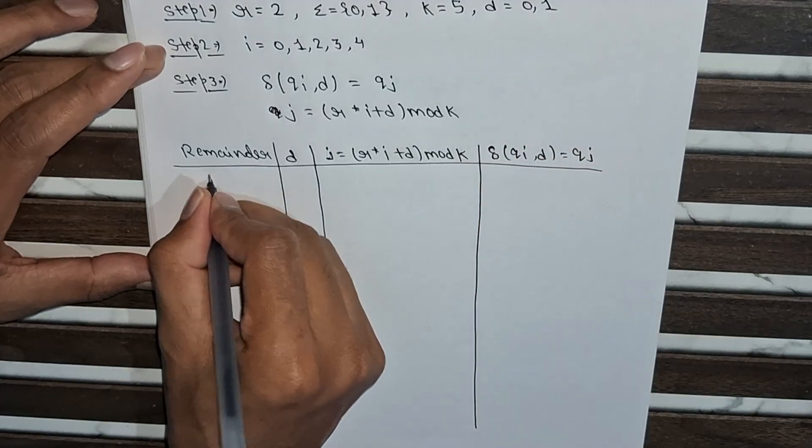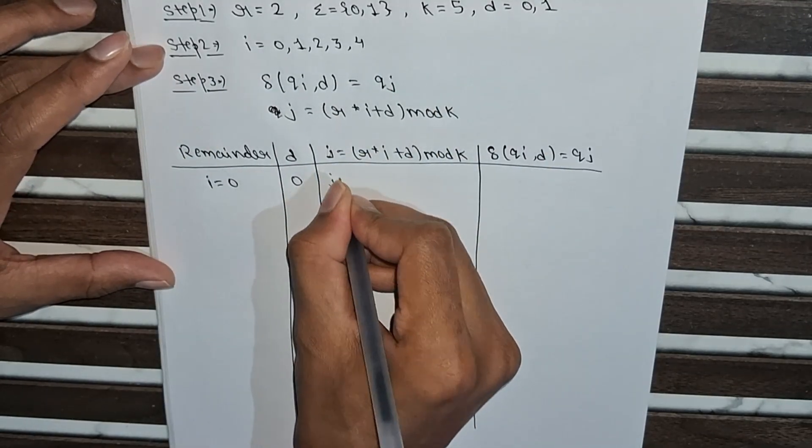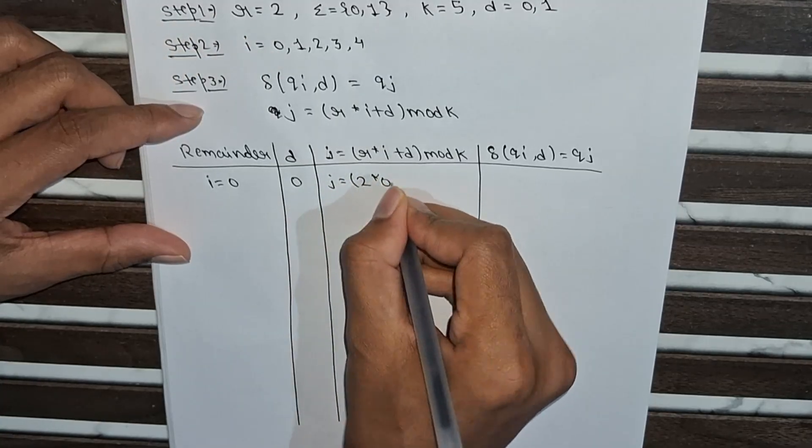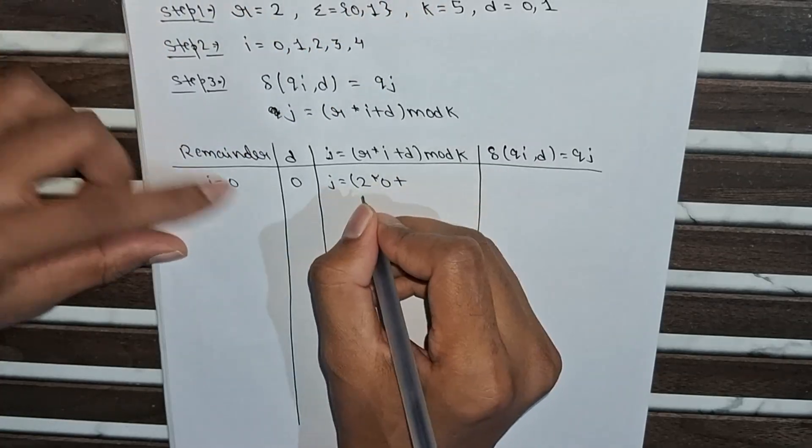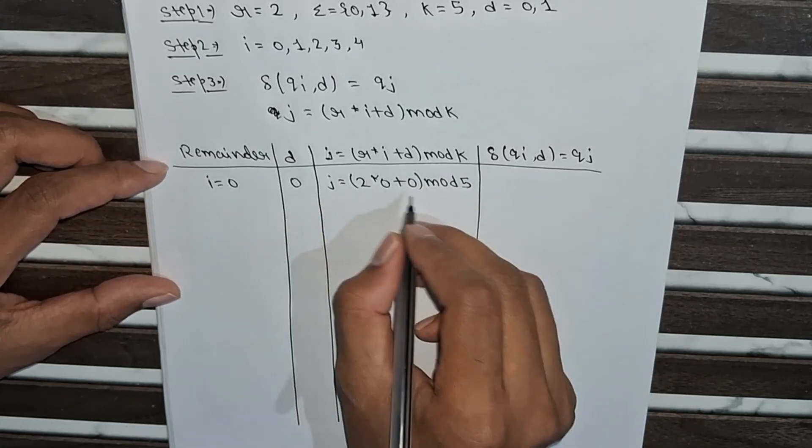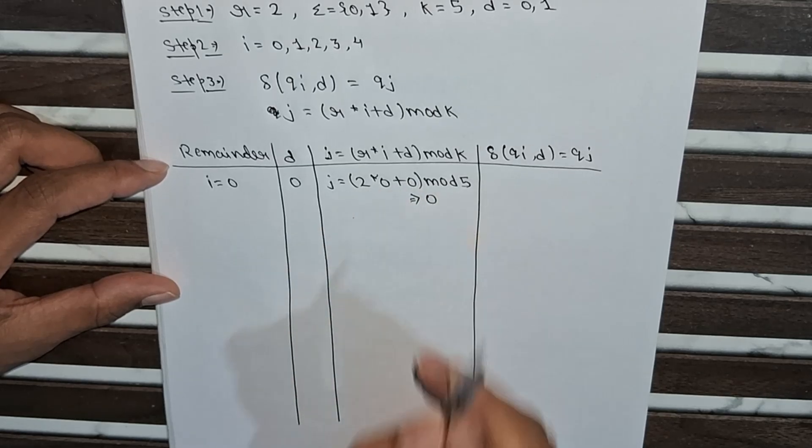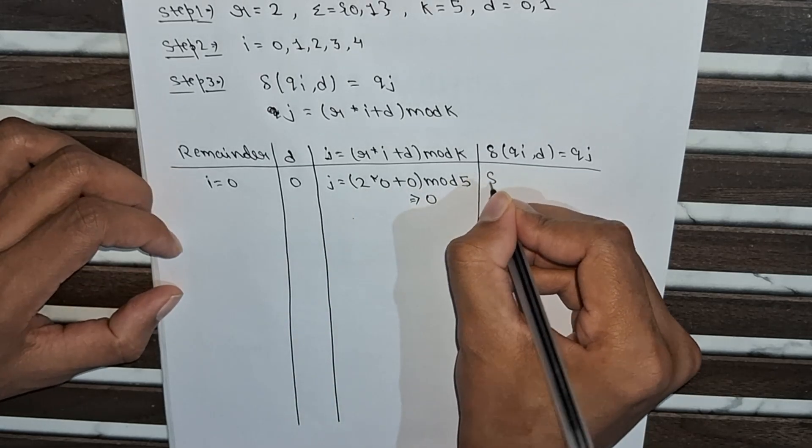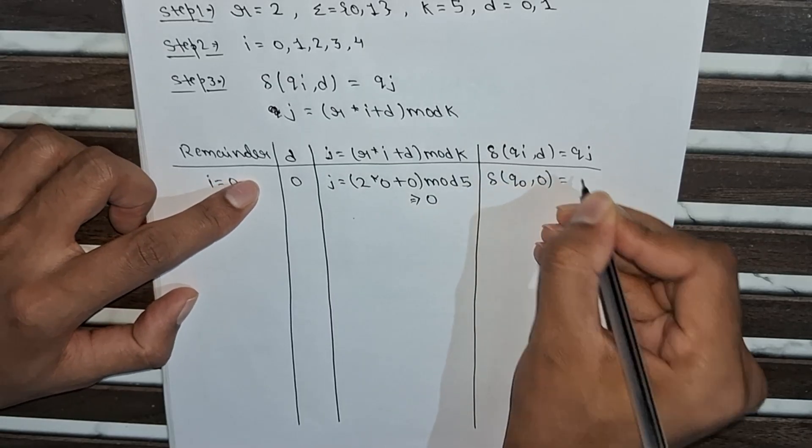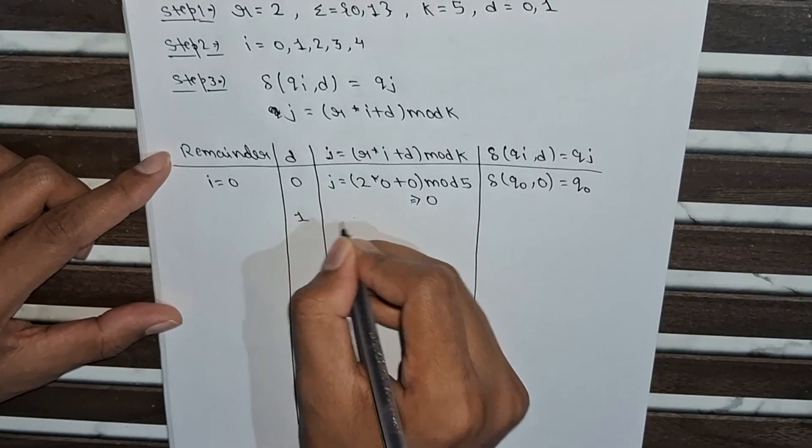So our first thing will be the remainder, then the D section, then the transition formula δ(qi, d) = qj. The first remainder value is 0. We take d value as 0. Then j = r × i + d mod k. The value of r is 2, i value is 0, d value is 0, mod 5. This gives us 0. So δ(q0, 0) = q0.